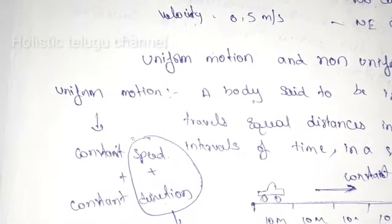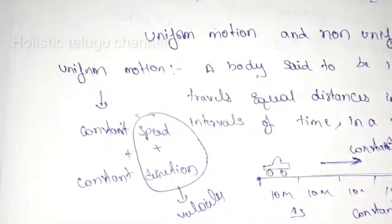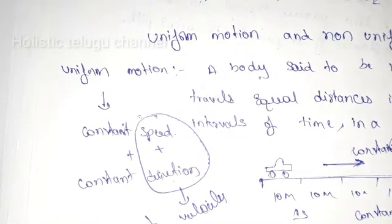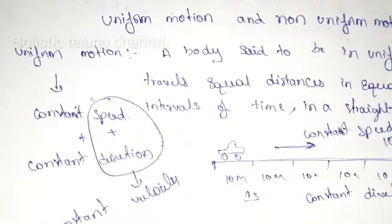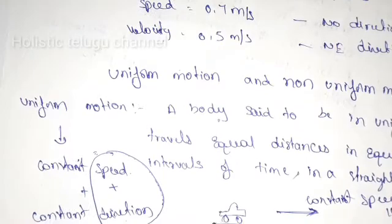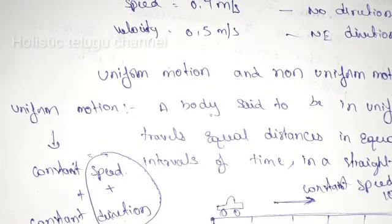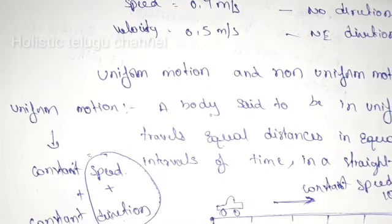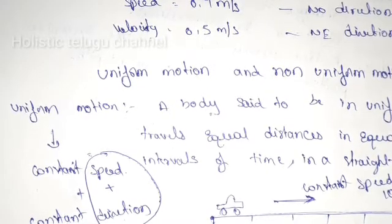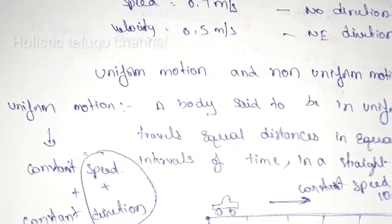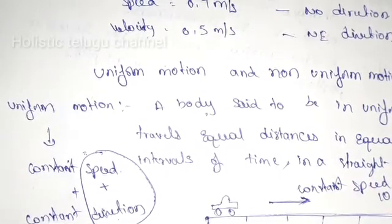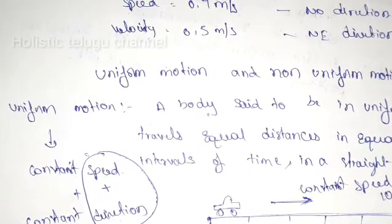Uniform motion means constant speed plus constant direction. Velocity is speed with direction, so this means constant velocity. If we have the car here, it is constant velocity. So the uniform motion definition is that a body moves at constant velocity. The uniform motion means equal distance in equal intervals of time in a straight line. That is called uniform motion.